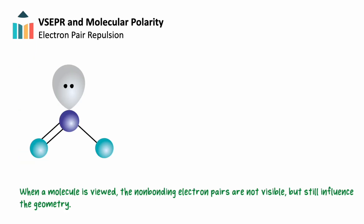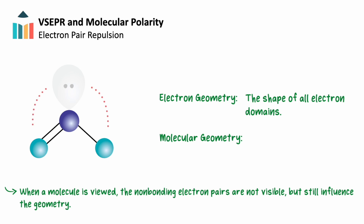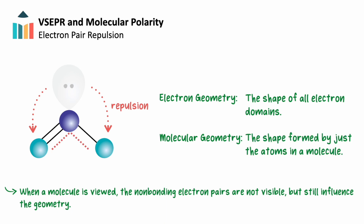The two descriptions we'll use for a molecule's shape are called its electron geometry and molecular geometry. Electron geometry describes the shape of all electron domains in three-dimensional space. However, when a molecule is viewed, the non-bonding electron pairs aren't visible, despite their influence on the structure through the repulsion of the other electron domains. The shape formed by just the atoms in the molecule is called its molecular geometry.